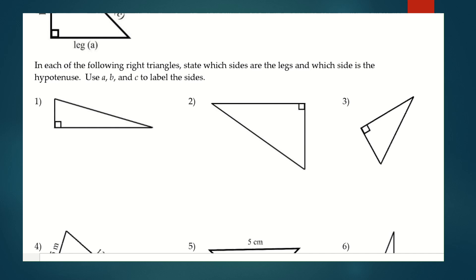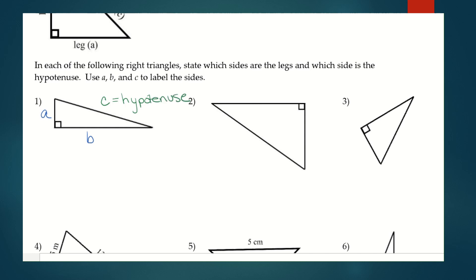For example in number one, the two legs create a right angle — I'm going to label this side A and this side B. Notice how these two sides together create a right angle. Across from the right angle is always the hypotenuse, which is C. So C always represents our hypotenuse, and A and B always represent legs of the triangle.